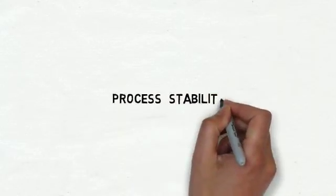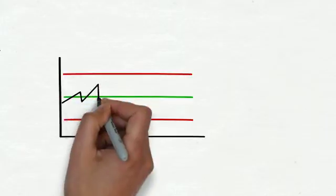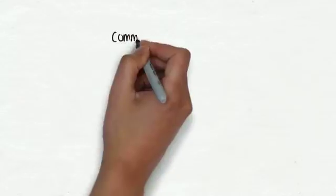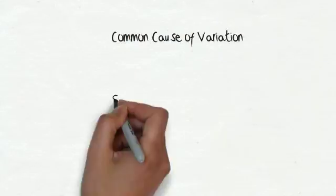In this tutorial we are going to talk about process stability. Process stability is the ability of the process to perform in a predictable manner over time. Stability is determined by examining whether common or special causes of variation are present.